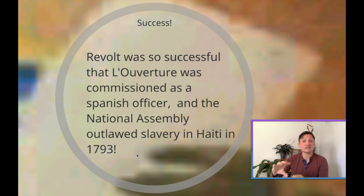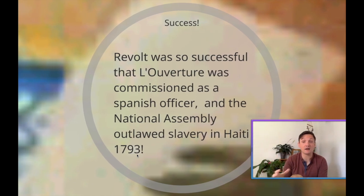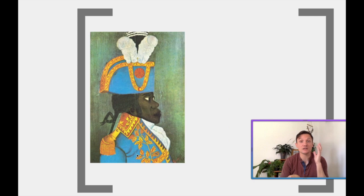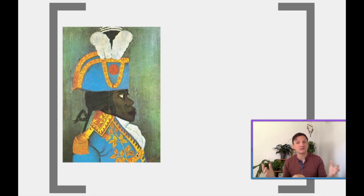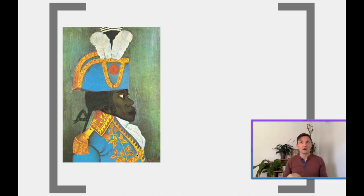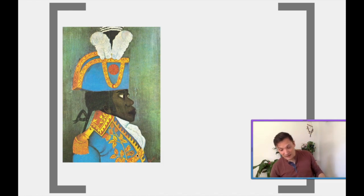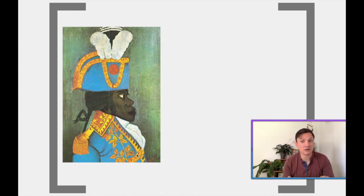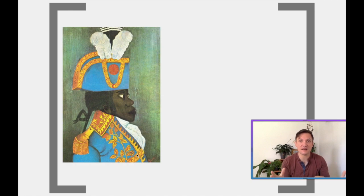The National Assembly decides to outlaw slavery in Saint-Domingue and Haiti altogether in 1793-1794. So Toussaint decides to switch back, returns to being a French citizen, and rules the colony for France — they never officially separated from France for some time. In 1793, Toussaint L'Ouverture becomes basically the de facto leader of the entirety of Haiti. This was the effect the French Revolution had on the colony of Haiti.